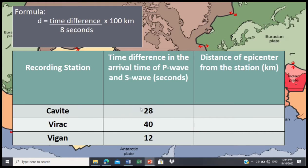For Cavite, we have 28 seconds of time difference divided by 8 seconds times 100 kilometers. Our answer is 300 kilometers.